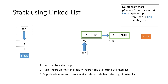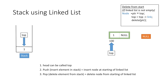Similarly if we have to pop another element from the stack, we take a temporary pointer ptr and equate it to top, then we move the top pointer to the next node by equating it to the link part of the current node, and finally we delete the current node using pointer ptr. In this way we can implement stack using linked list and perform the push and pop operations.